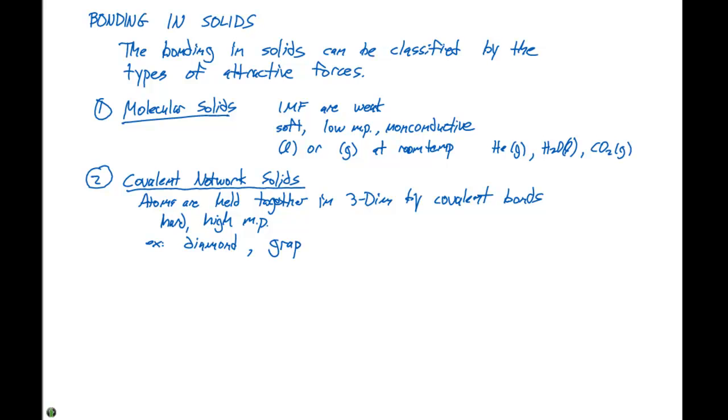And also, graphite is an example of a covalent network solid. Here we have sheets of carbon held together by intermolecular forces between the sheets.